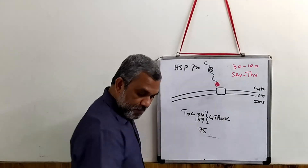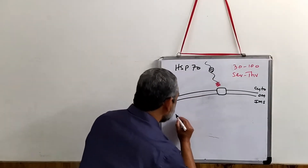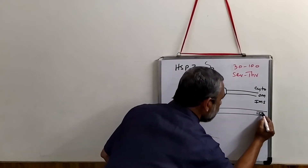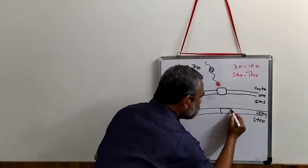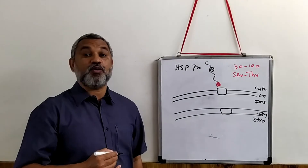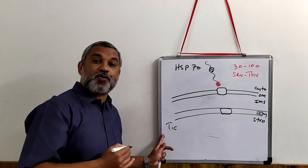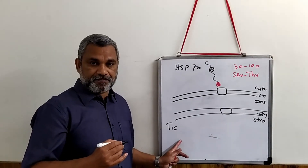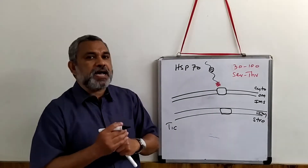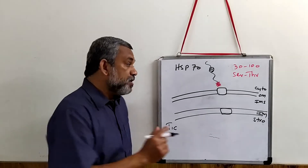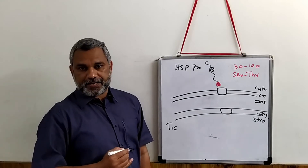Now let us also look at the inner membrane of the chloroplast. This is the stromal side. The inner membrane also has another translocase protein that is known as TIC — Translocon of the Inner envelope of the Chloroplast. The TIC and the TOC will be in close association at those locations where a protein has to be directly transported to the stromal side.